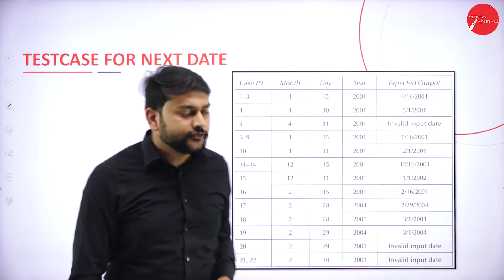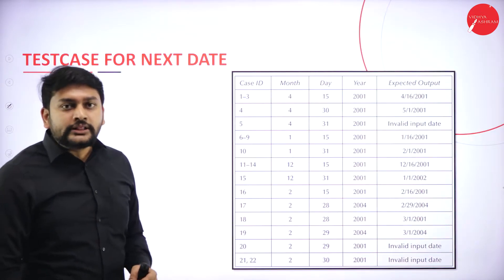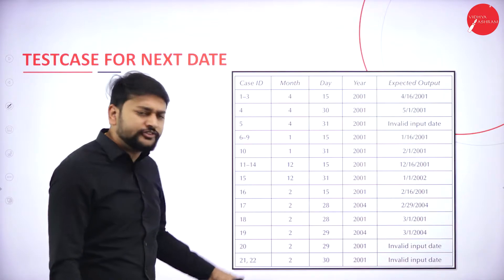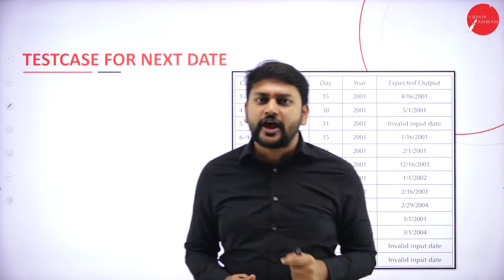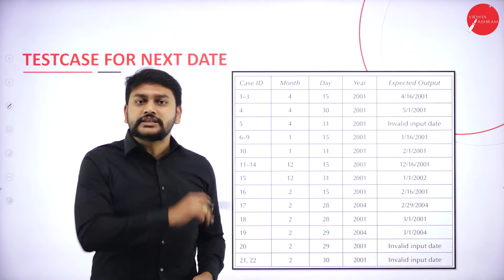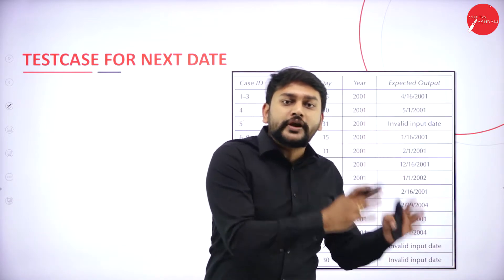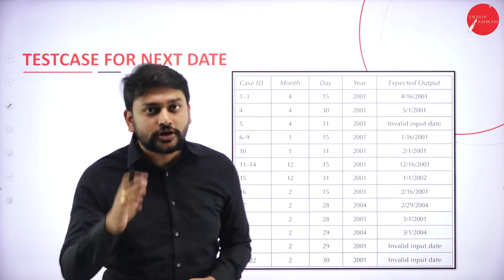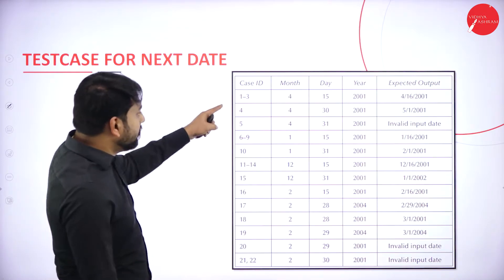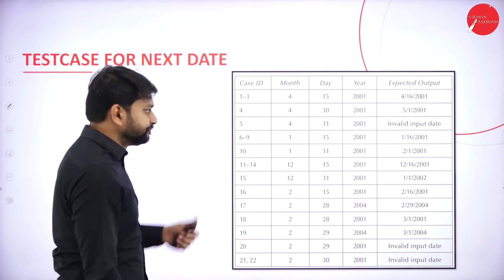Please observe the first column — it speaks about the case ID, that is, the test case ID. I have test cases numbered 1 through 22. In my previous session, when discussing the decision table, I had rule numbers up to 22 in total. That is what I would like to represent with the help of these test cases. Rule numbers 1, 2, and 3 will have the same structure.